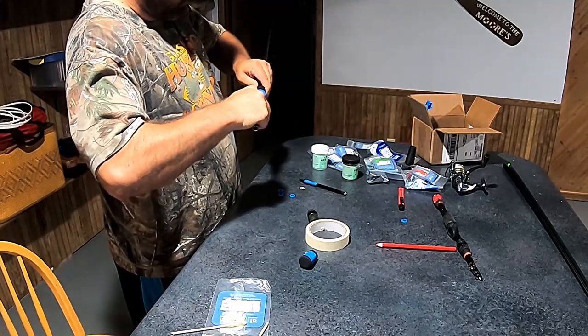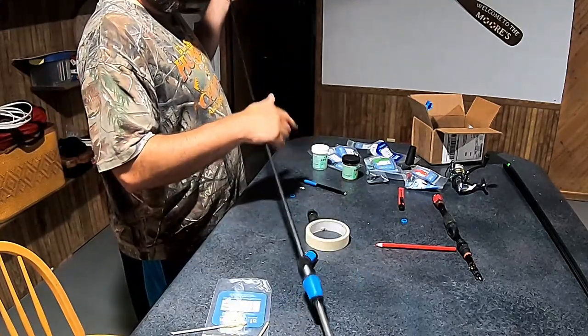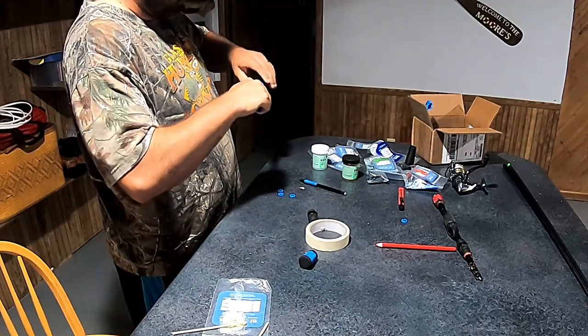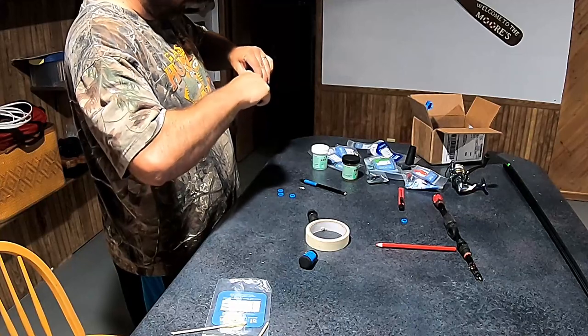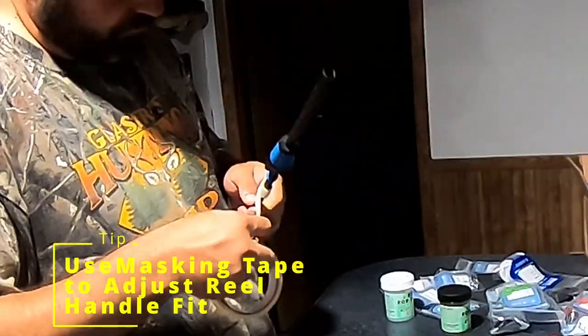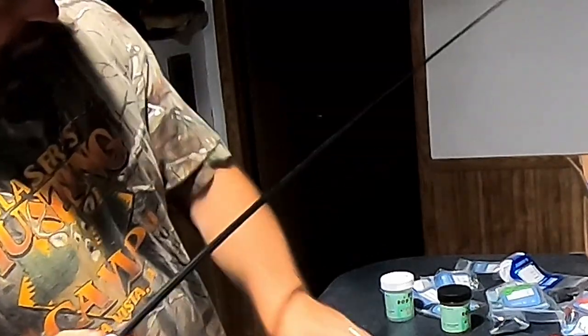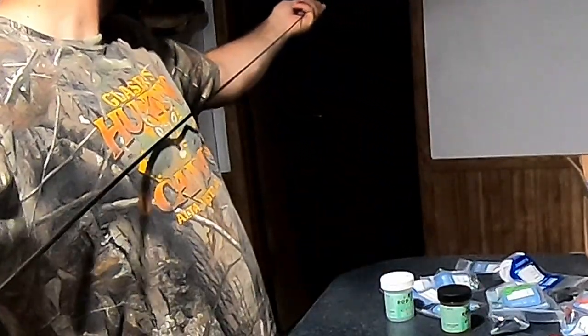Once we have everything on, I'm going to spine the blank. In order to do that, essentially what you do is apply a little bit of pressure to a part of the blank. I like to do it around the middle of the blank. That way you get that heavier spine down towards the base. It's a little easier to feel, too.